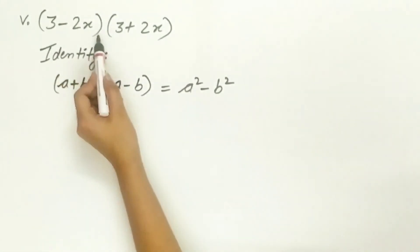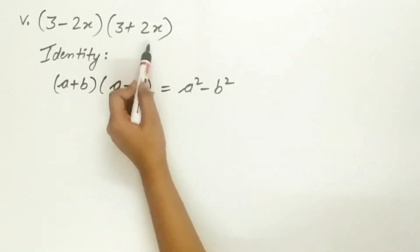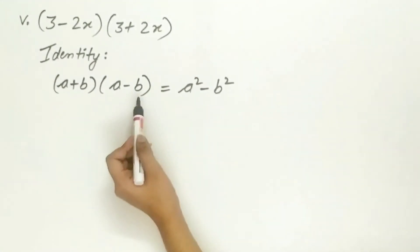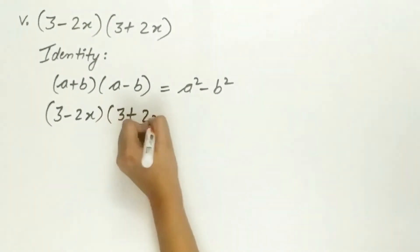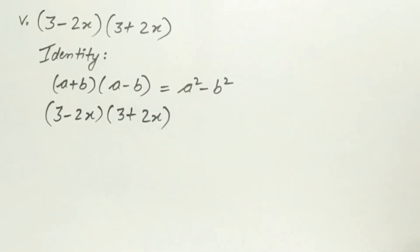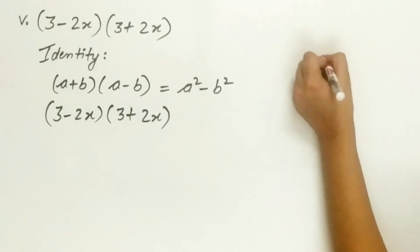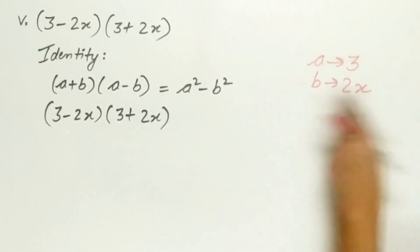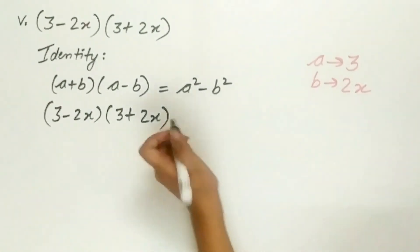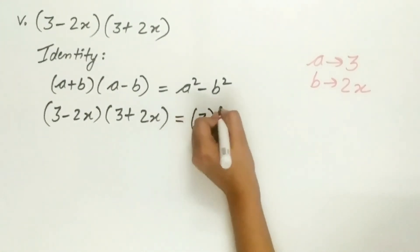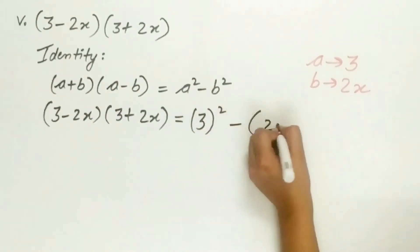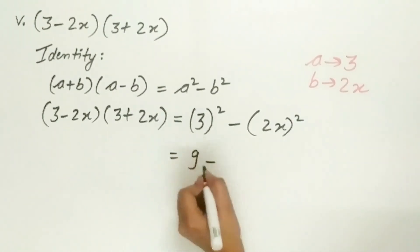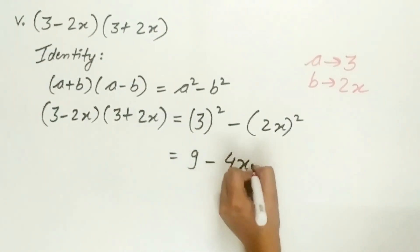The fifth part is (3 − 2x)(3 + 2x). We use the identity (a + b)(a − b) = a² − b², where a is 3 and b is 2x. Substituting: 3² − (2x)² = 9 − 4x².